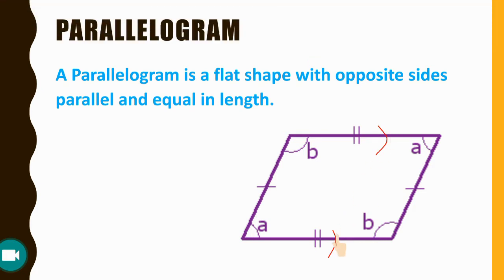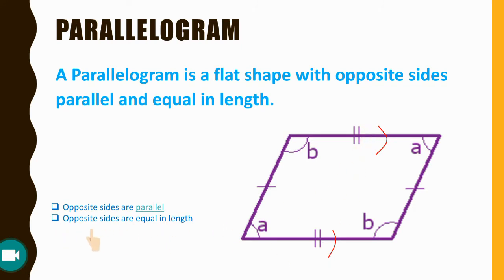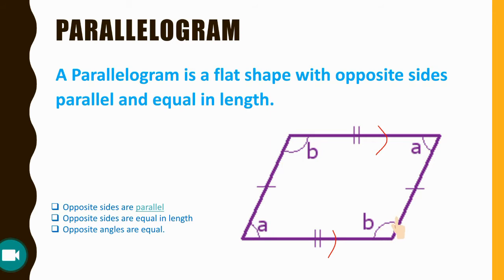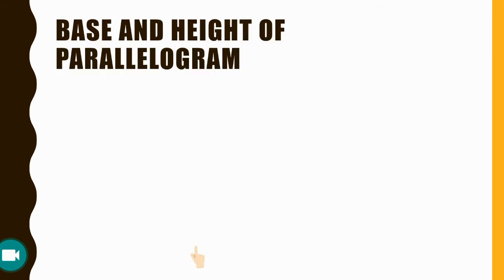So you can say that the parallelogram has the following characteristics: opposite sides are parallel, opposite sides are equal in length, and opposite angles are equal. For example, angle A and the angle opposite to it are equal, and angle B and the angle opposite to it are also equal.